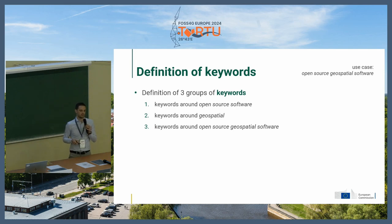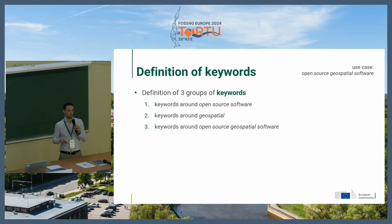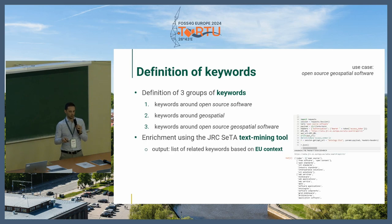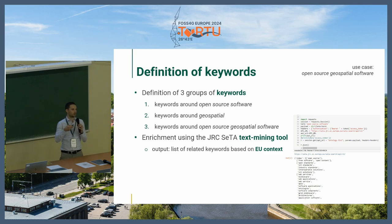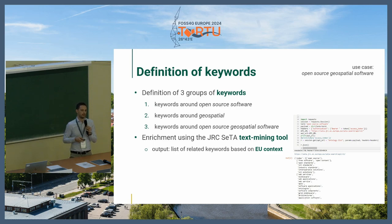It all starts from some keywords. In this case, we define three groups: keywords around open source software in general, keywords around geospatial, and keywords around open source geospatial software. We enrich those keywords using CETA — the Semantic Text Analyzer. It's a text mining tool developed at the JRC, trained on hundreds of thousands of EU documents: EU laws, EU publications, EU open data portal, the Cordis portal for EU-funded research and innovation projects, and so on.